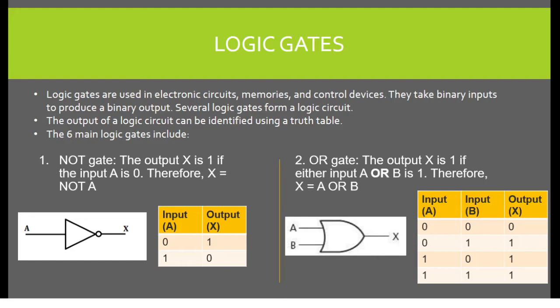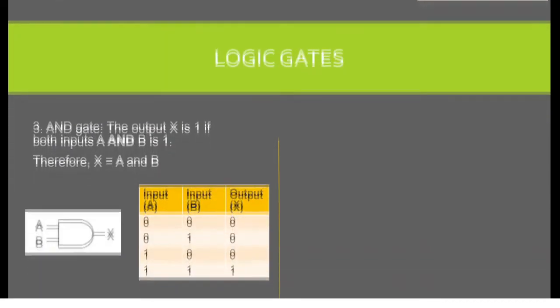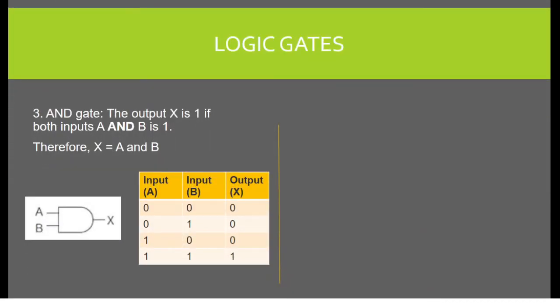AND gate. The output X is 1 if both inputs A and B is 1. Therefore, X equals A and B. So when the input is 1, the output is 1.